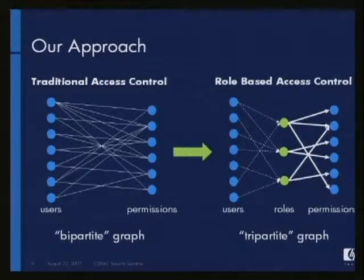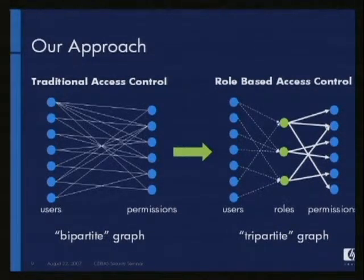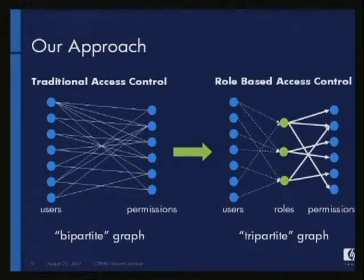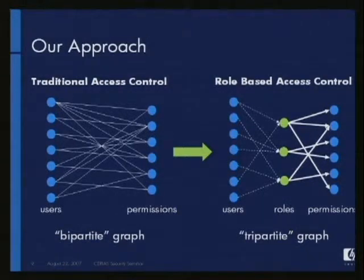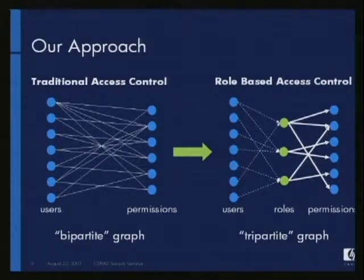What we do is we take a graph-theoretic approach to this. We model traditional access control as a bipartite graph — users on the left, permissions on the right, with an edge between a user and a permission if that user has that permission. Role-based access control we can think of as a tripartite graph with three layers, where roles in the middle consist of a set of permissions, and you assign users to those roles. The problem of role discovery is to transform the bipartite graph into an equivalent tripartite graph, where equivalent means if there's a path from left to right in the bipartite graph, that same connectivity holds in the tripartite graph, and if no path exists on the left, no path should exist on the right.